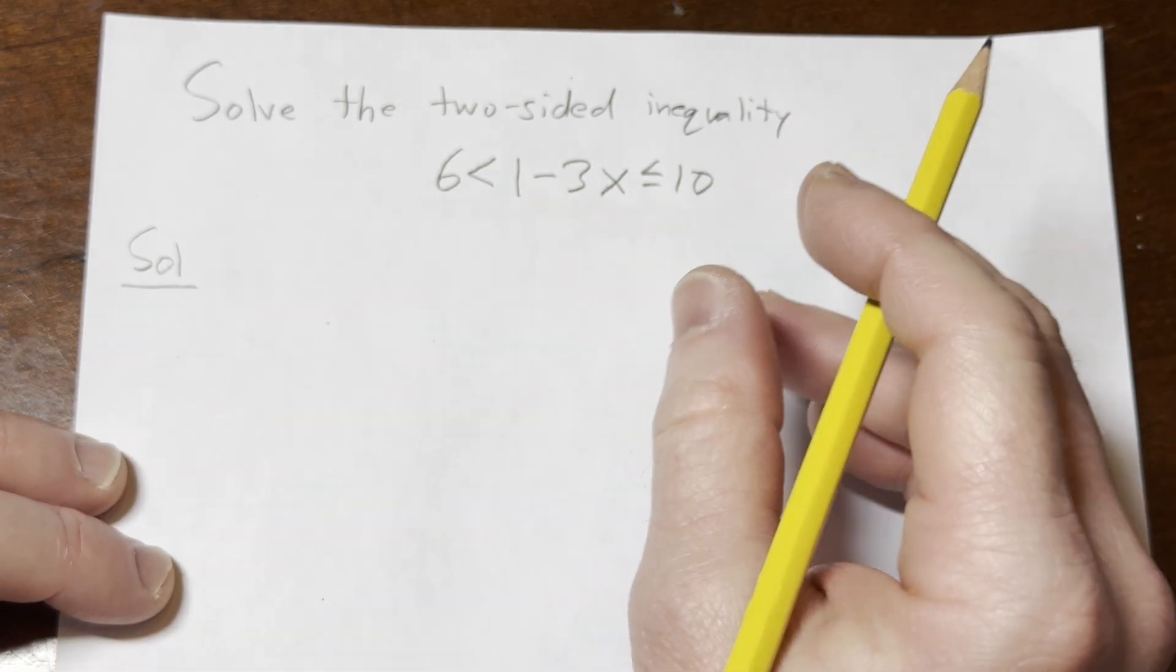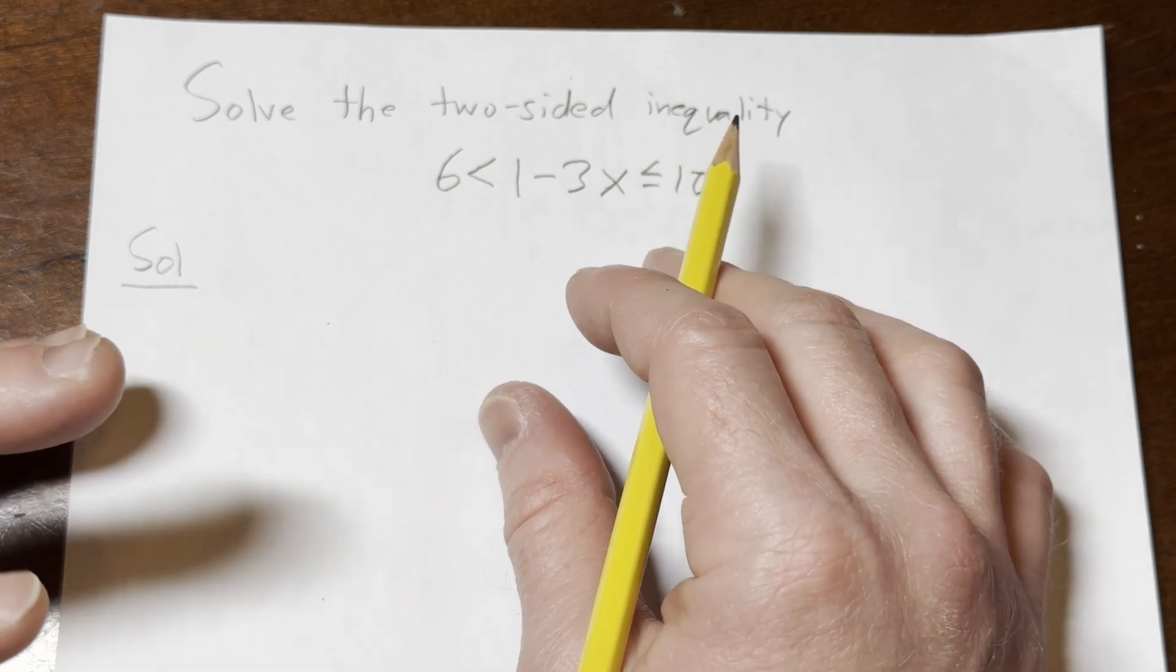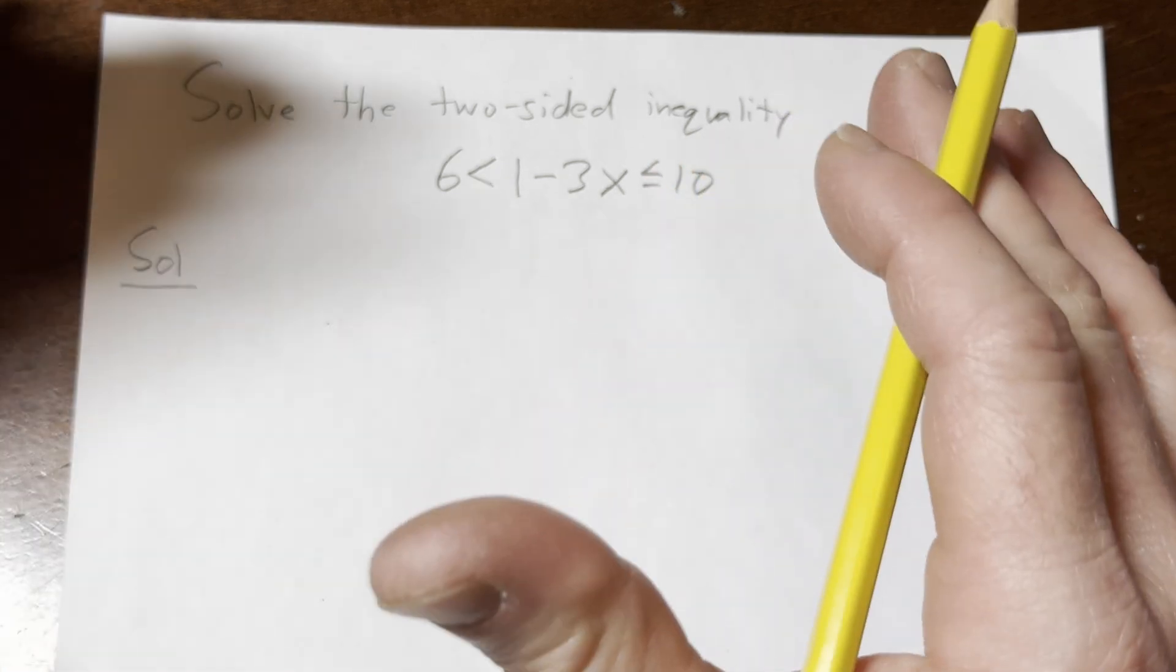So this is what's called a compound inequality. You can break it up and solve the inequality separately, however, I do think that is more work. So let's just do it all at once.